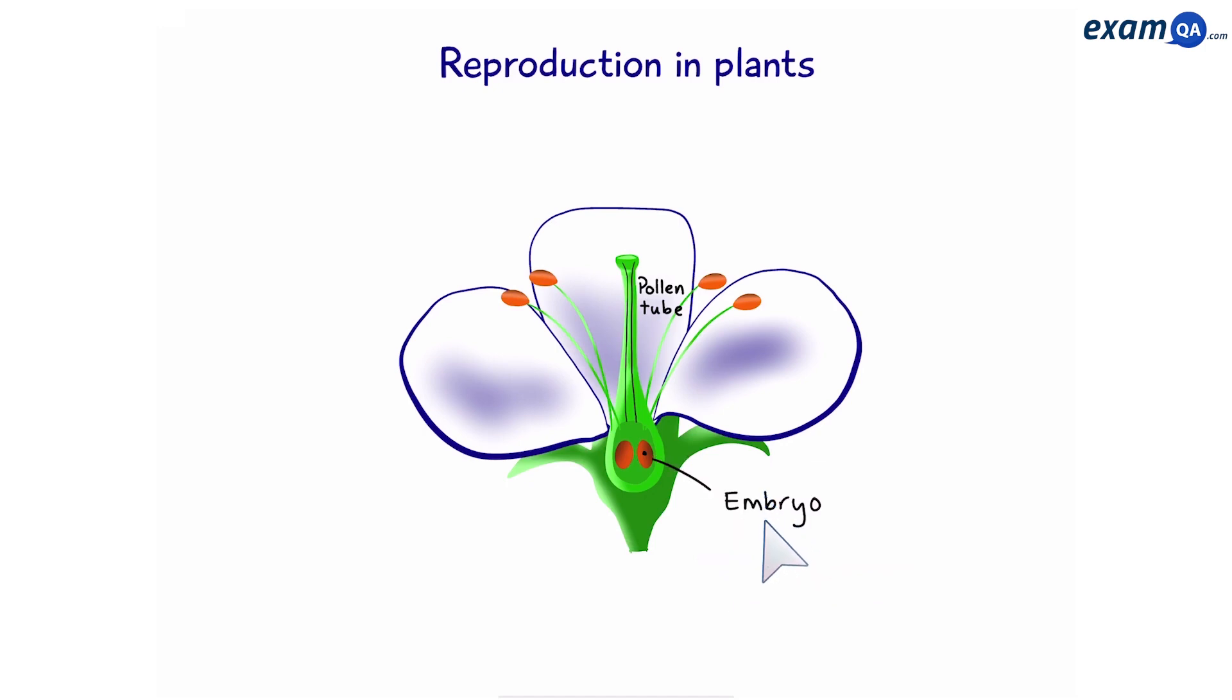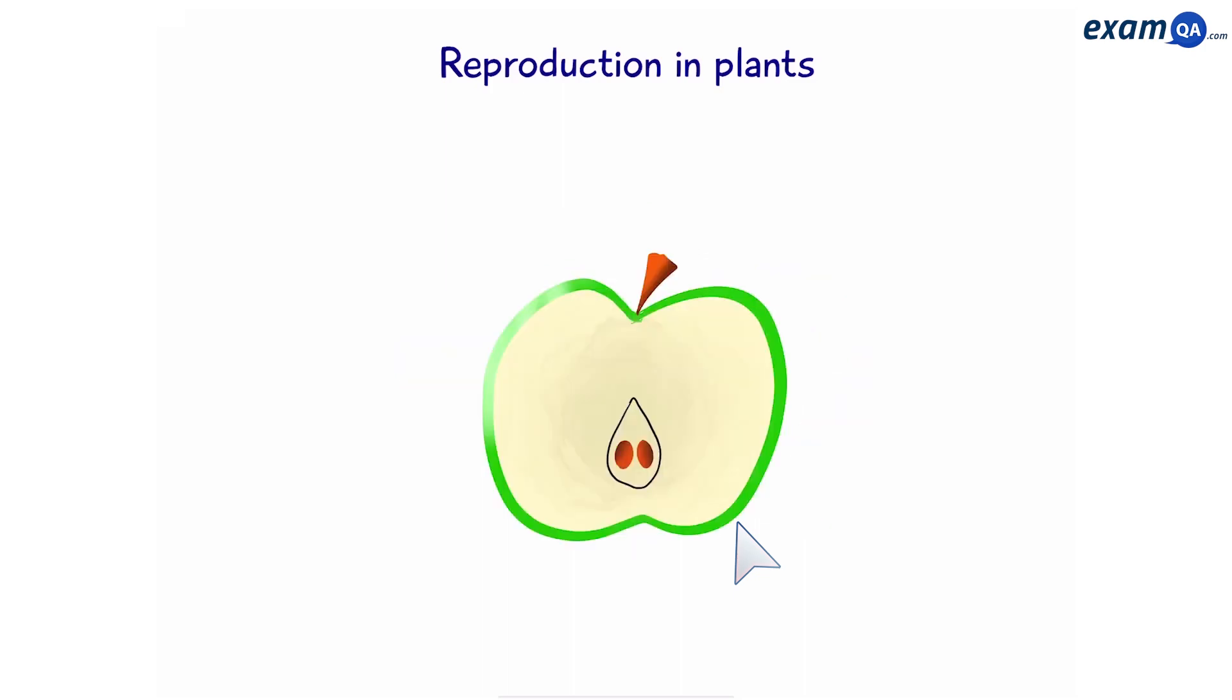We have now created an embryo. The other one is called a dormant embryo. This will act as food for the embryo once it's ready to germinate. But we're not there yet. This embryo needs to make its way into the soil where it can grow into a plant. So this flower eventually turns into a fruit.